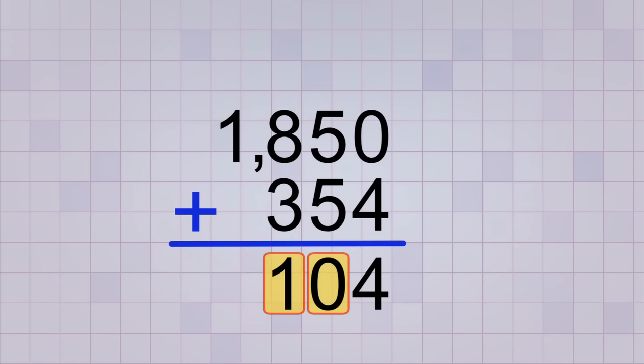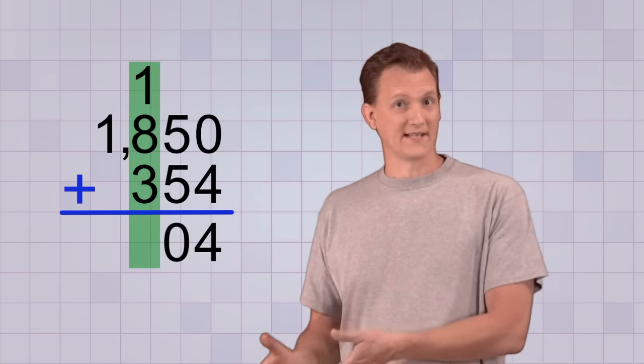The answer is we carry the digit that we don't have room for up to the top of the next number place column. Instead of putting it in the answer space, we put it above the other digits in our hundreds place column so that we can add it with the rest of the digits in that column.